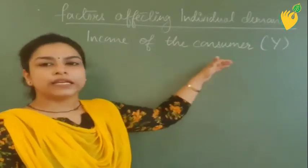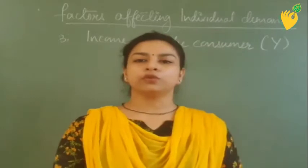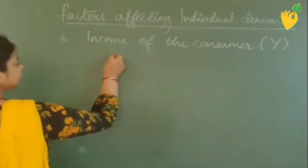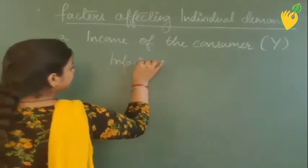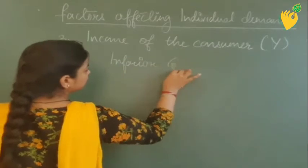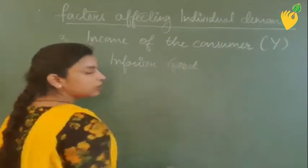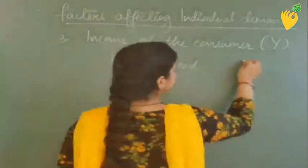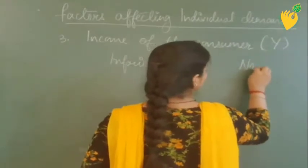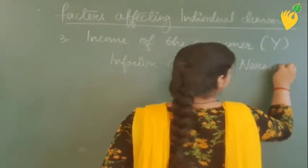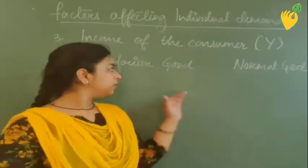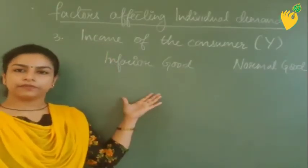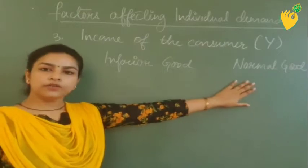Before going ahead, we have to know there are two types of commodities. Either a commodity will be an inferior good or it will be a normal good.